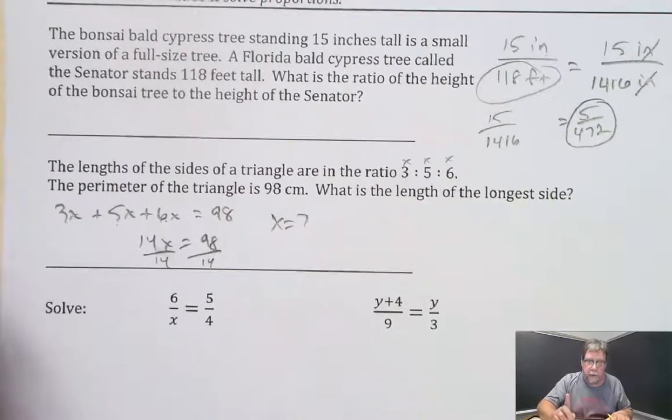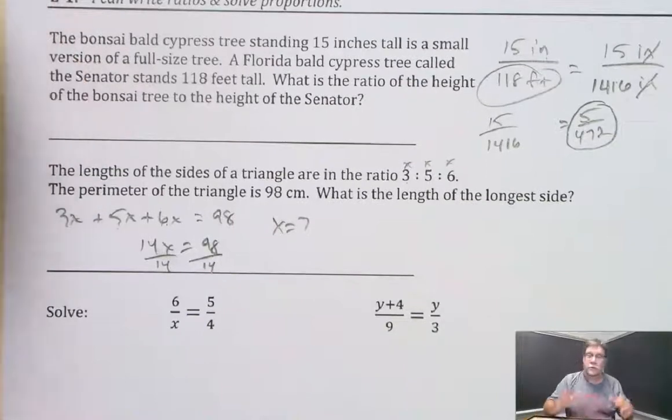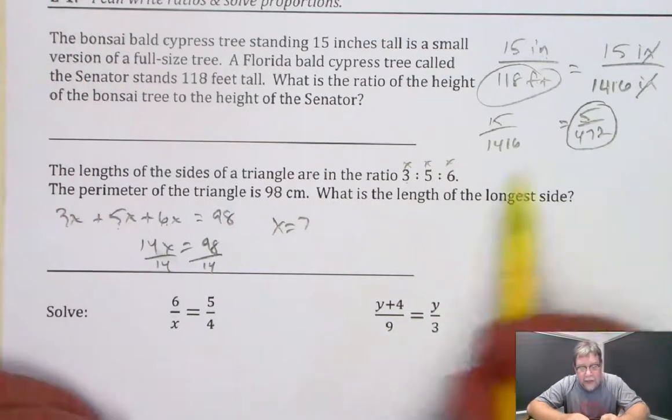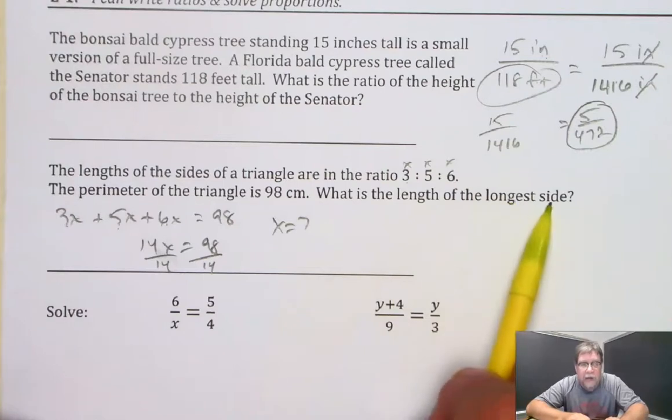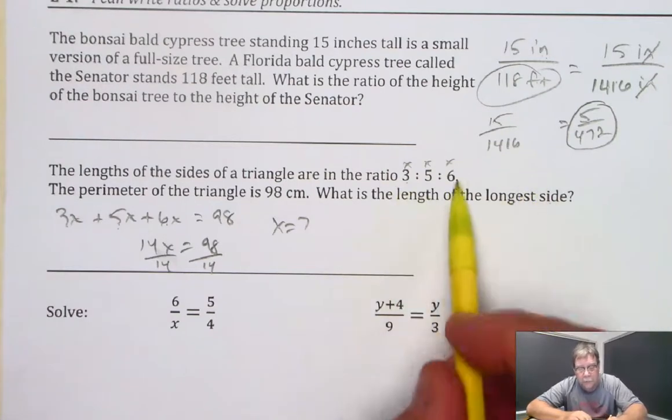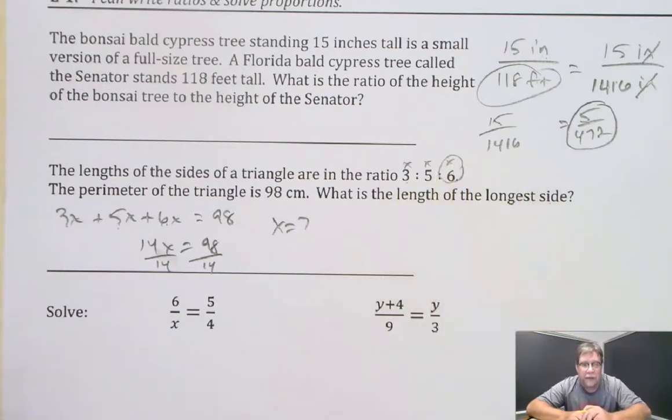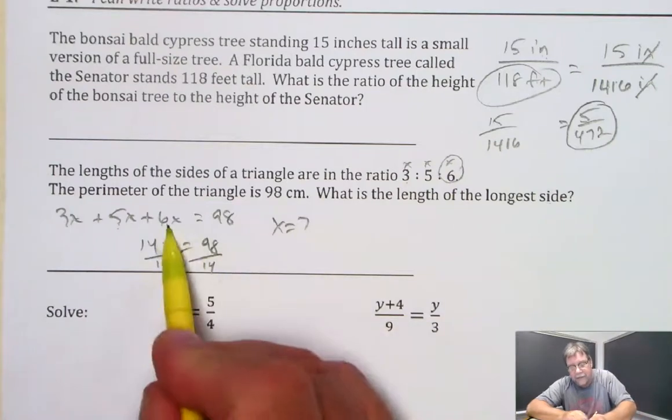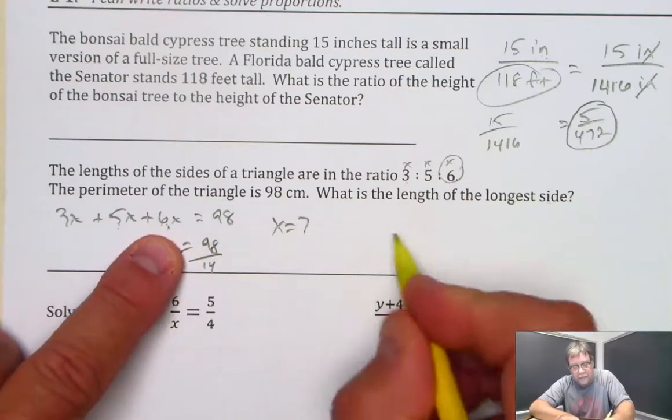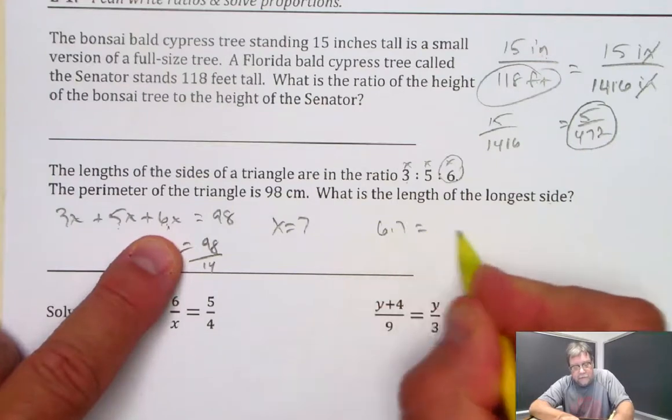You are not done with the problem because the answer is not 7. The question didn't ask for x. It asked for the length of the longest side. Well, the longest side would be the one where you have 6 times x. So we're going to take 6 and multiply it by 7. And 6 times 7 is 42.